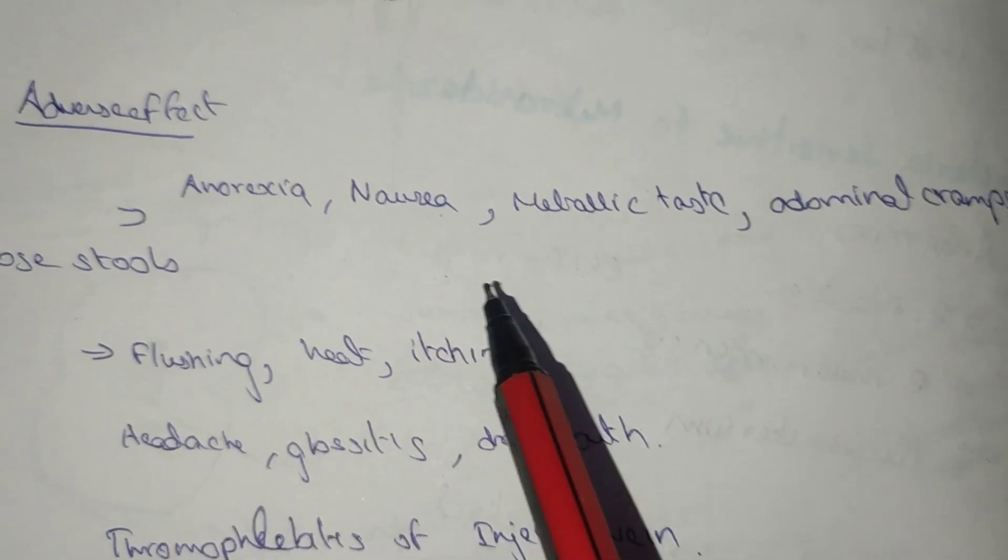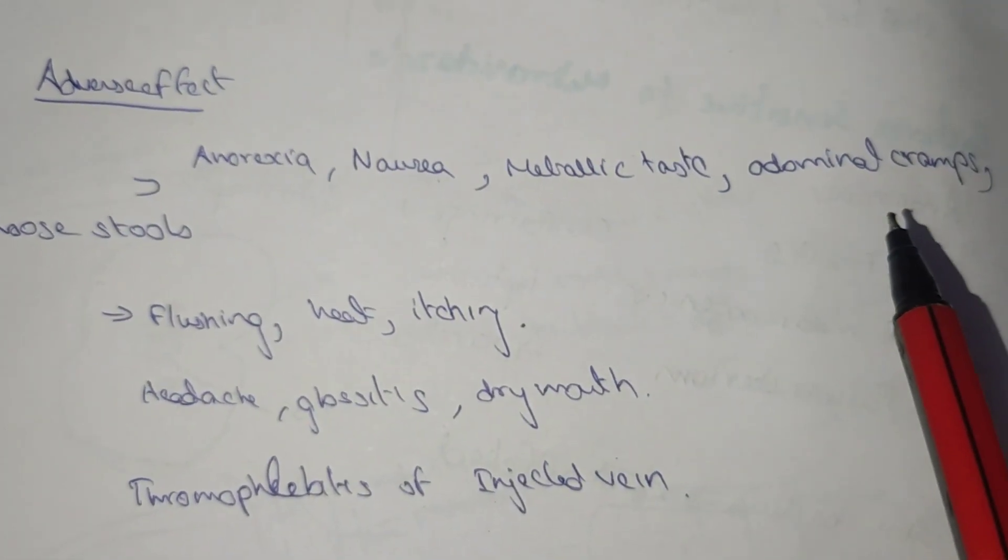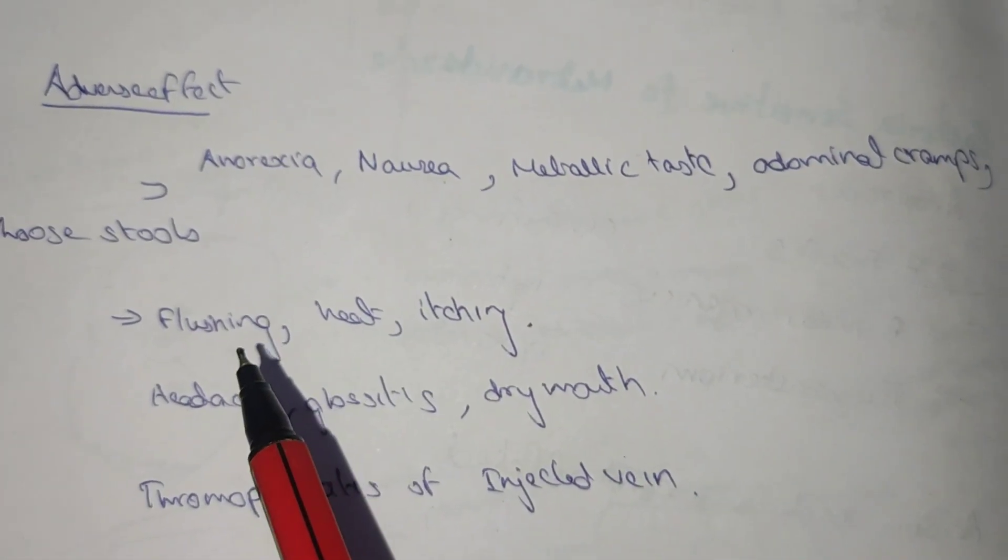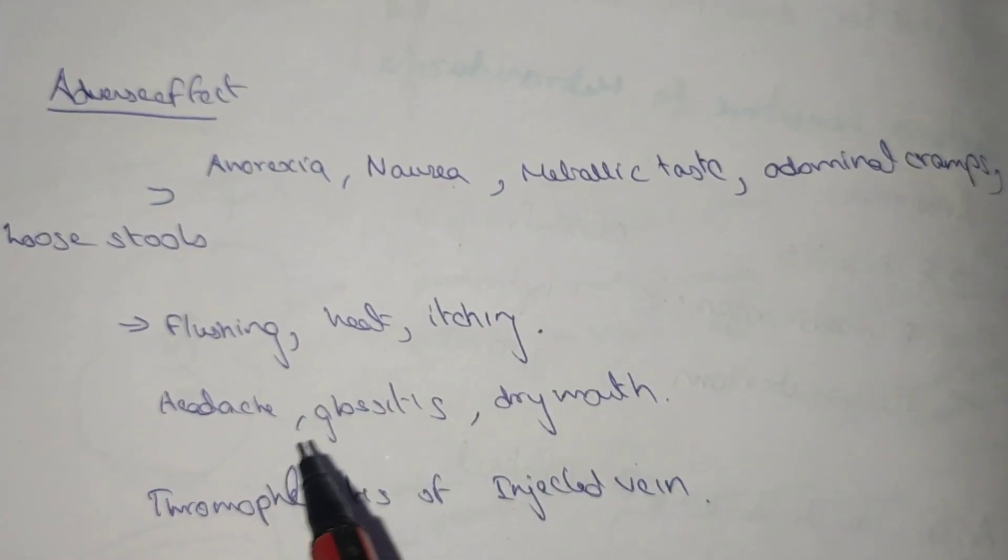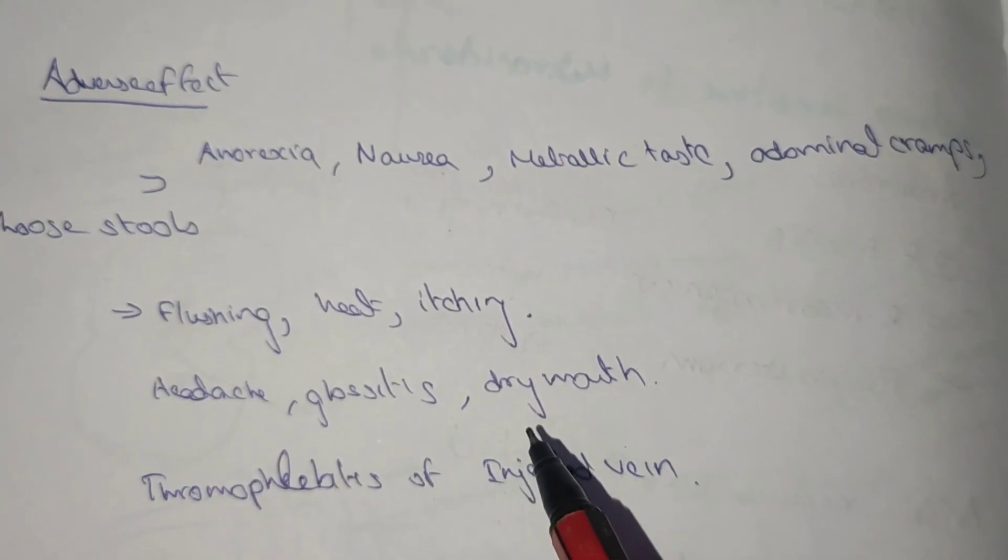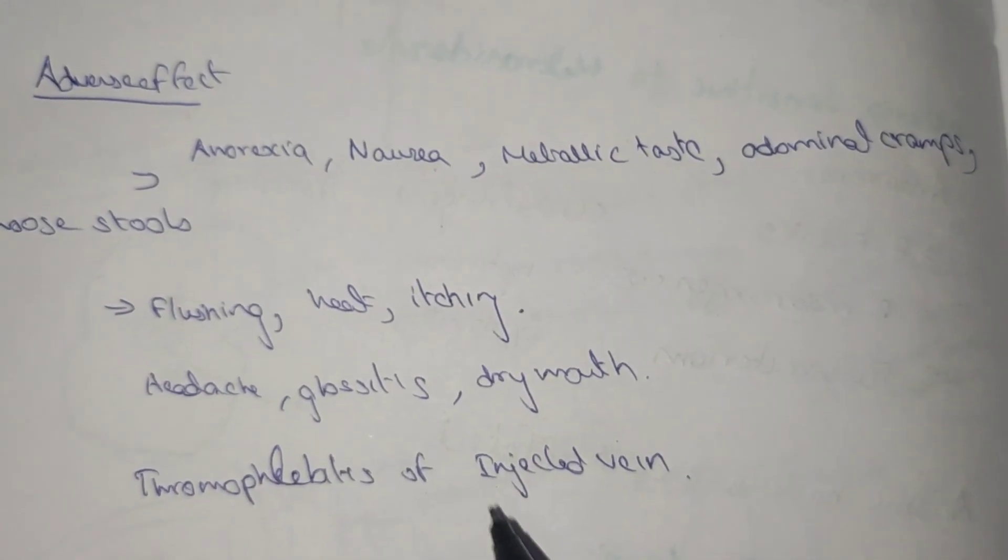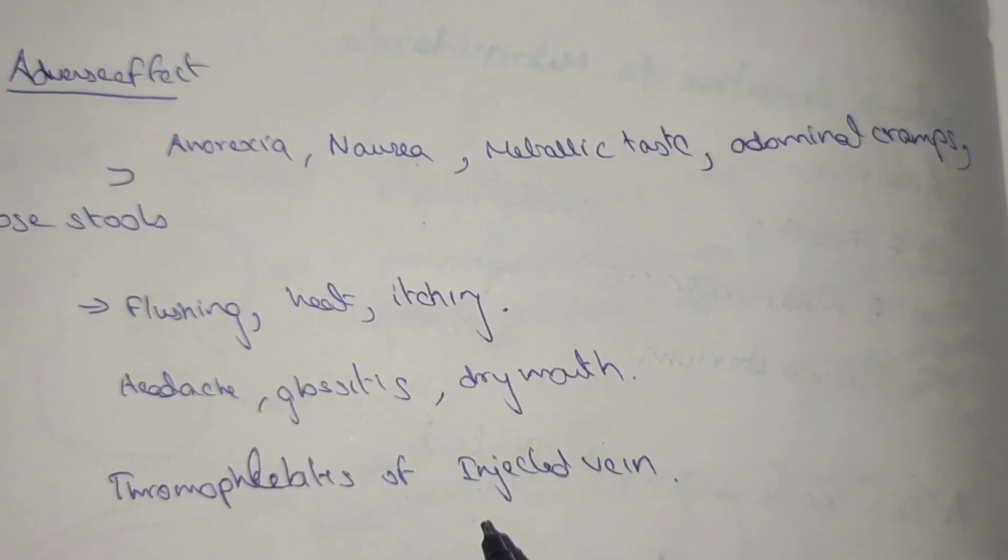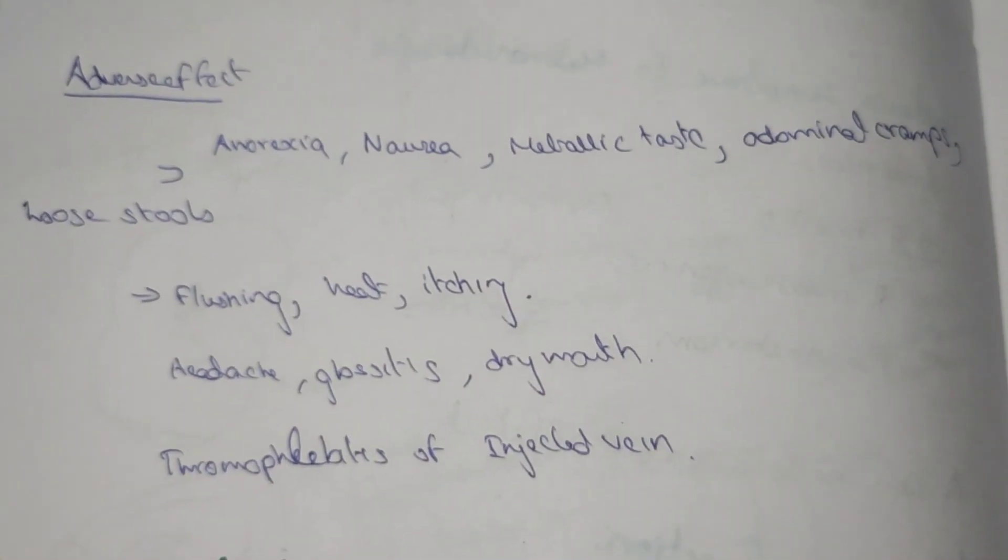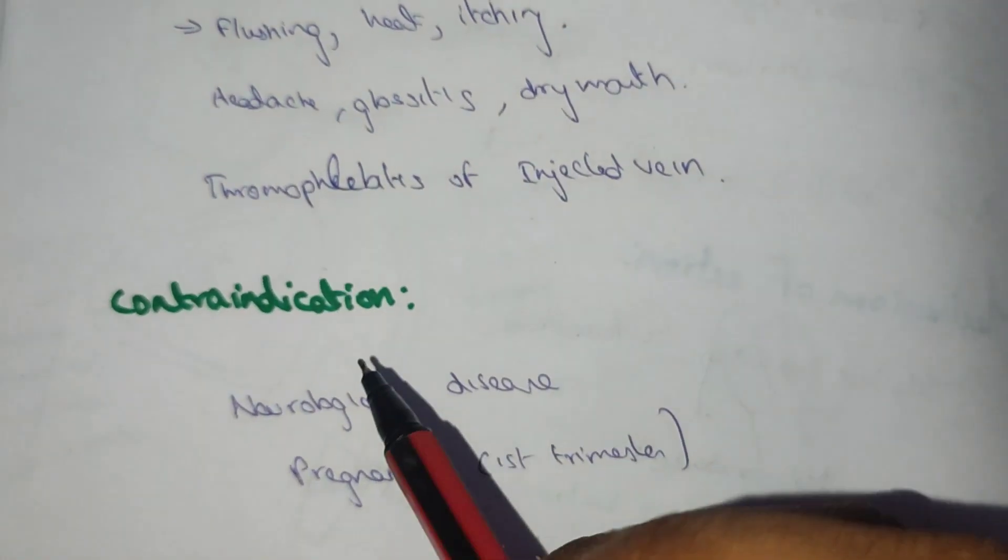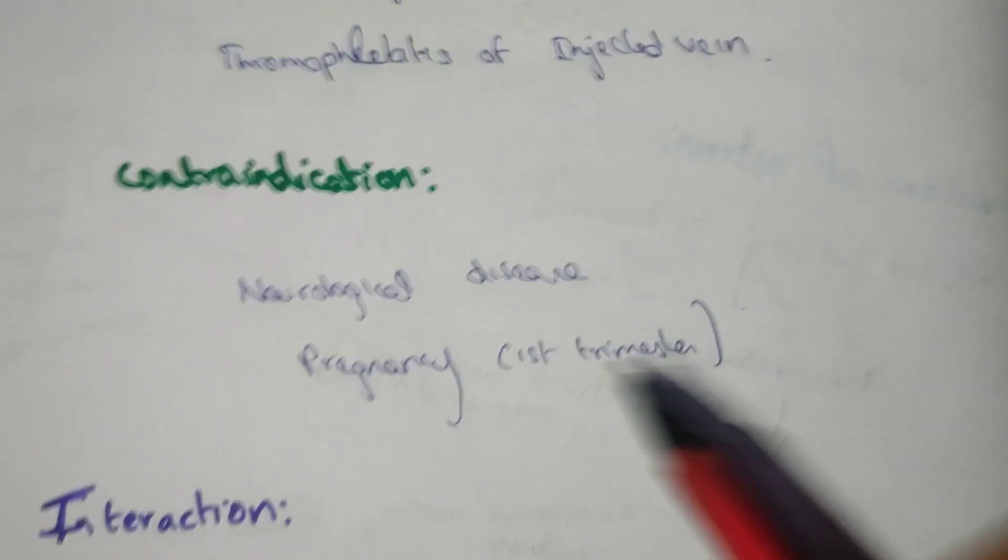The adverse effects are anorexia, nausea, metallic taste, abdominal cramps, loose stools, flushing, heat, itching, headache, glossitis, dry mouth, and thrombophlebitis. When we inject it in the vein, this causes thrombophlebitis - there is thrombus formation in the vein.